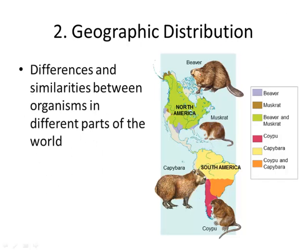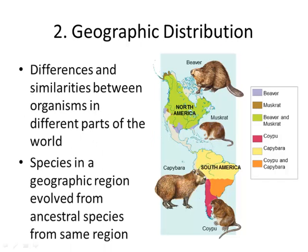Geographic distribution is the idea that in different parts of the world there are similar organisms, like the beaver in North America and the capybara in South America. They have adapted to their environment, so there are slight differences between them. This proves that there is some sort of common ancestor or ancestral species that these organisms evolved from.